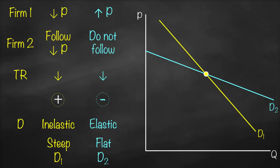You will discover that demand curve D1 and demand curve D2 intersect at a point, giving us a certain quantity Q* and a certain price P*. At a lower price, the demand curve is inelastic, which means steeper. At a higher price, the demand curve is elastic and flatter. Therefore at a higher price we choose the part of the flatter curve, and at a lower price we choose the part of the steeper inelastic curve — and that's why we call it the kinked demand curve, because the demand curve is broken at this intersection point.